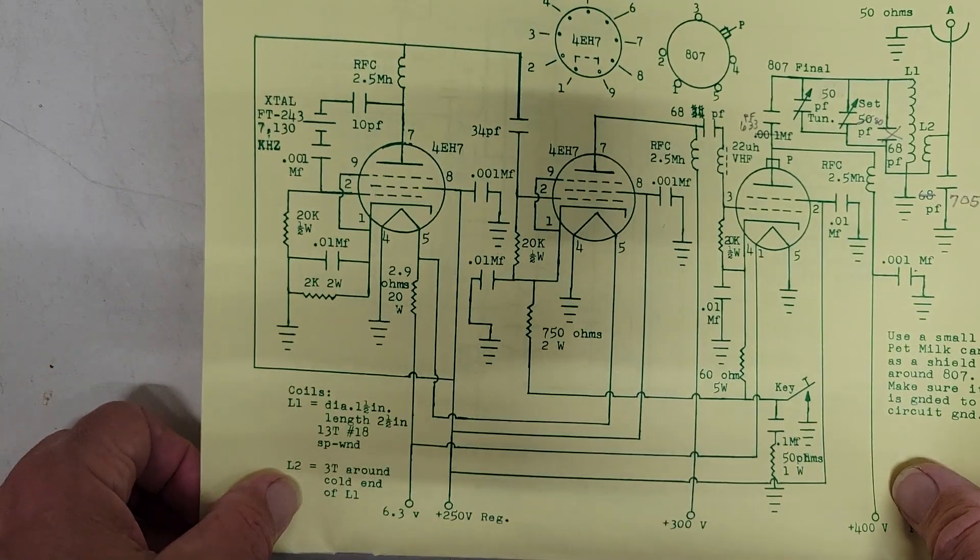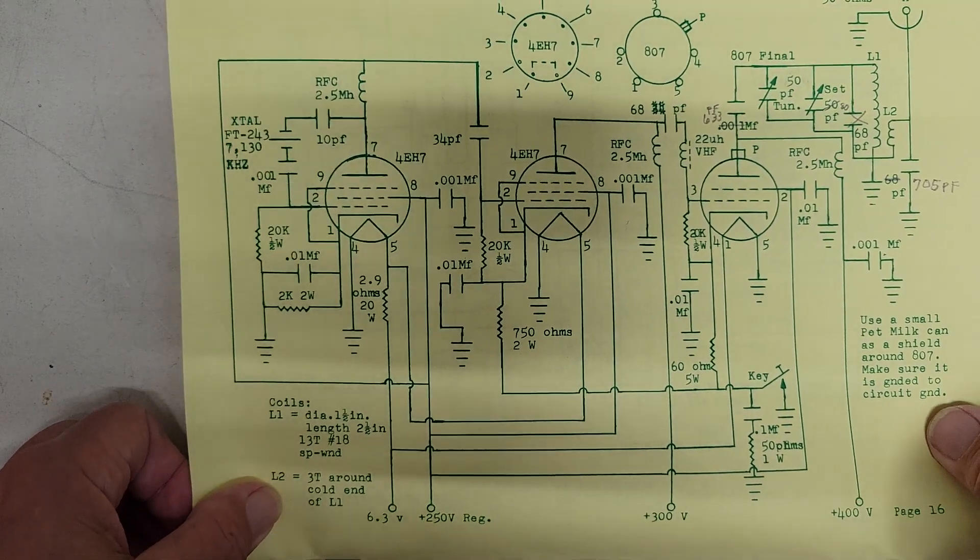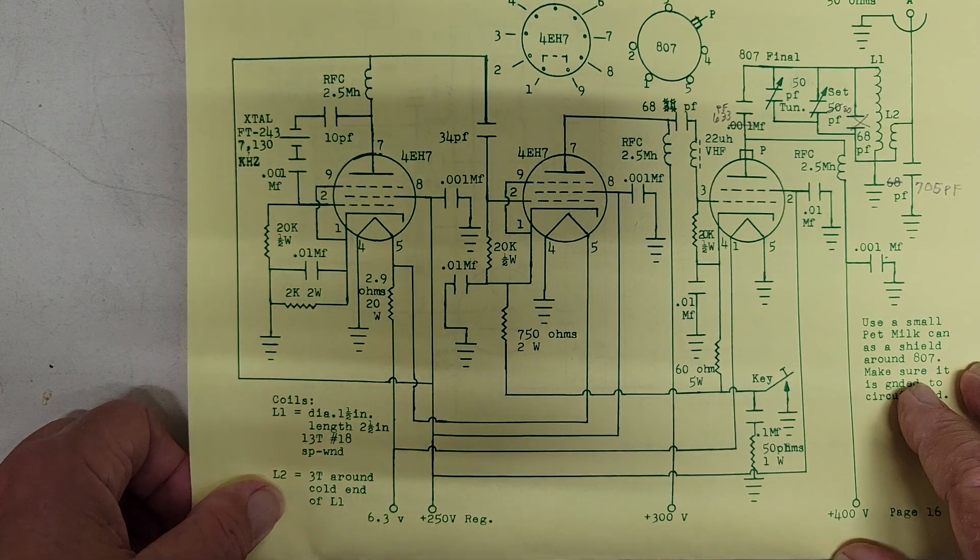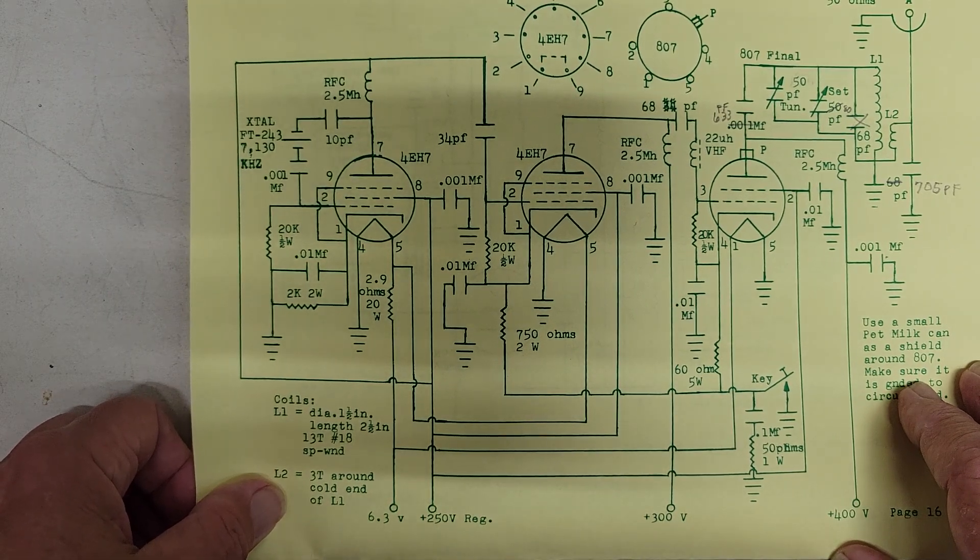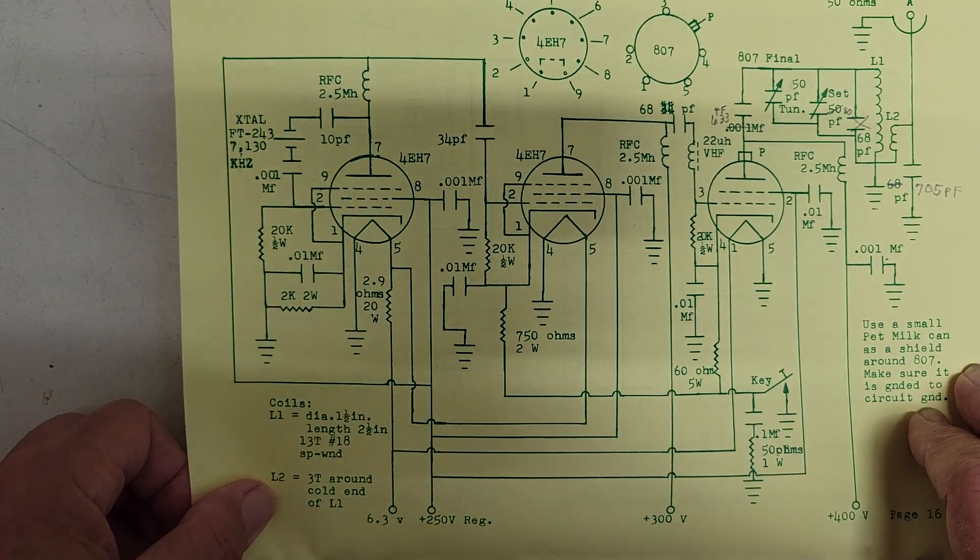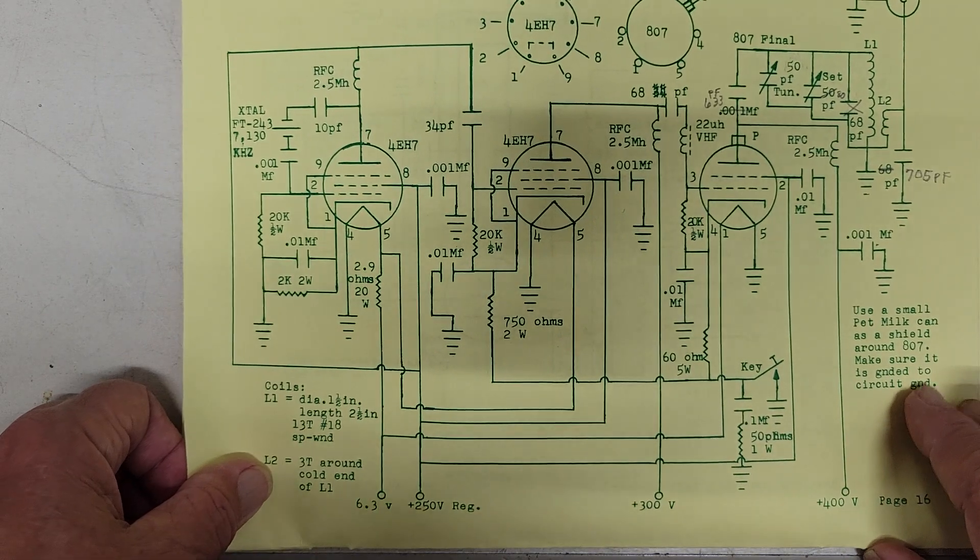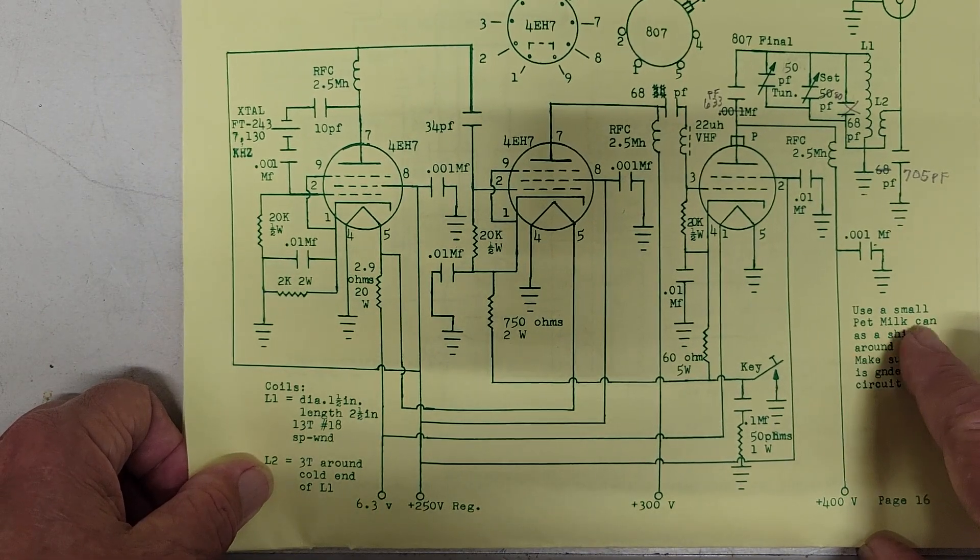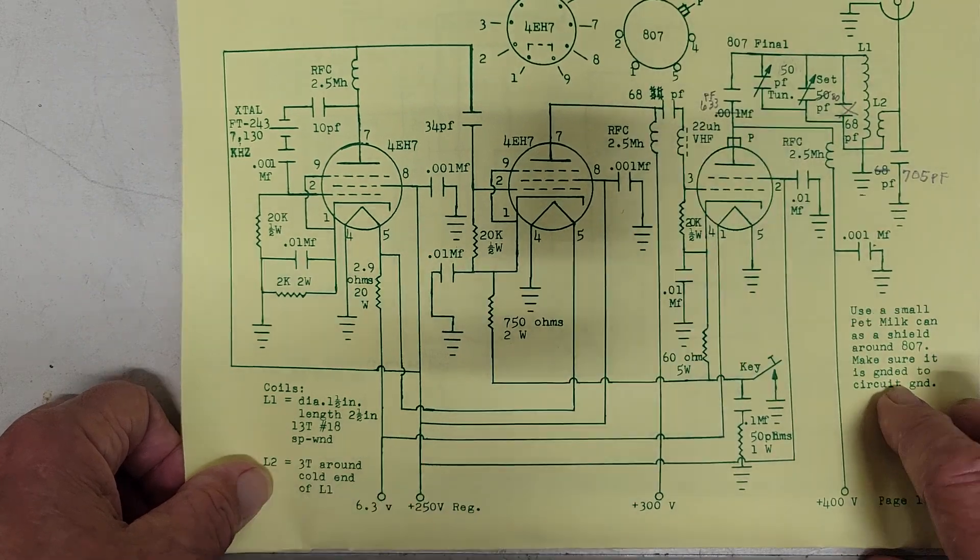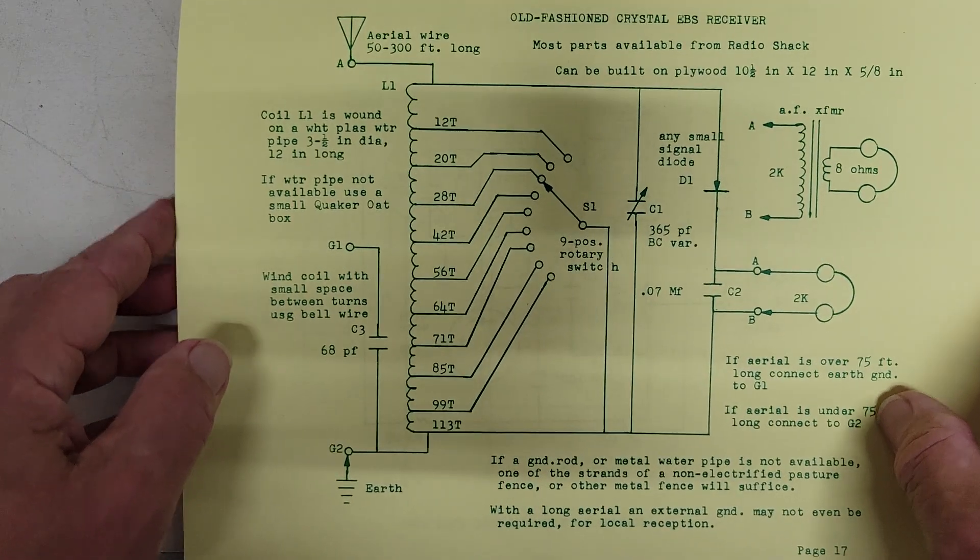Here we have a 40 meter three tuber. This is a big one here, 807 final and a 4EH7 oscillator and buffer. I'm not familiar with 4EH7. And he tells you here about using a can of pet milk can as a shield around the 807.